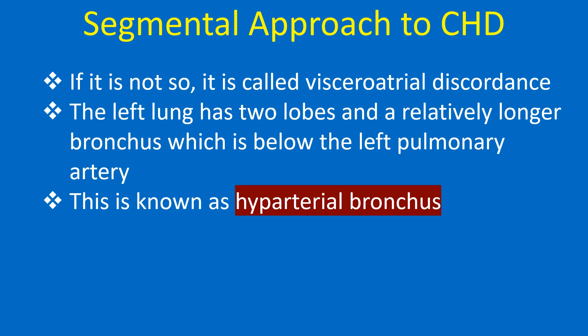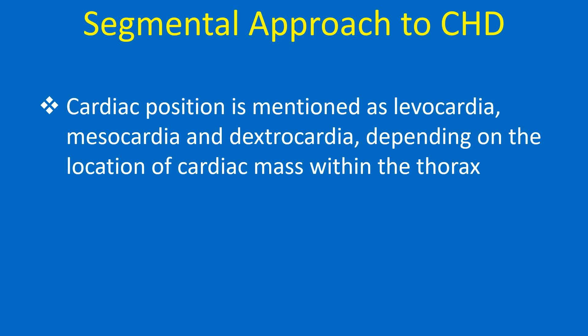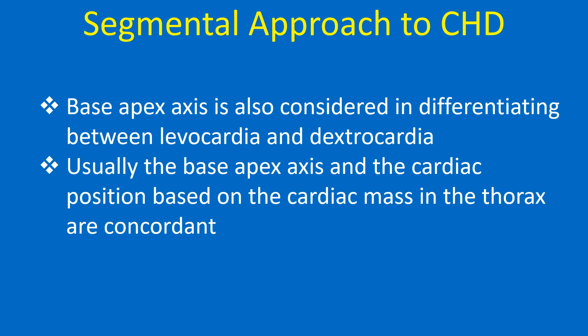The left lung has two lobes and a relatively longer bronchus which is below the left pulmonary artery — this is known as hyparterial bronchus. The right lung has three lobes and a wider, shorter bronchus which is above the right pulmonary artery; the right bronchus is eparterial. Cardiac position is mentioned as levocardia, mesocardia and dextrocardia depending on the location of cardiac mass within the thorax. The base-apex axis is also considered in differentiating between levocardia and dextrocardia, and usually the base-apex axis and the cardiac position based on the cardiac mass in the thorax are concordant.